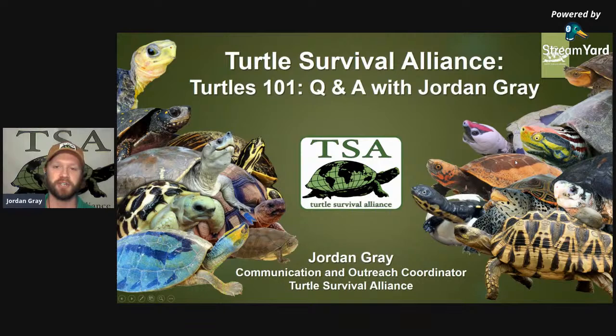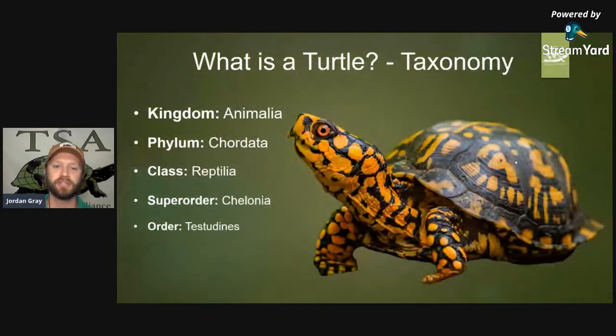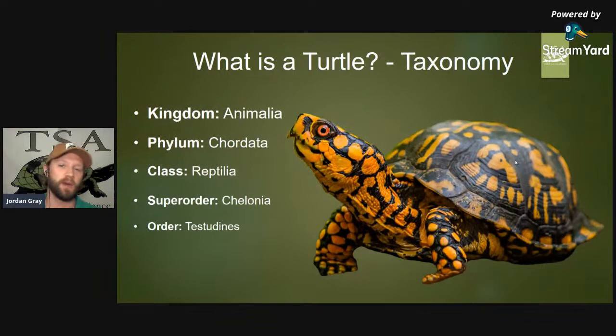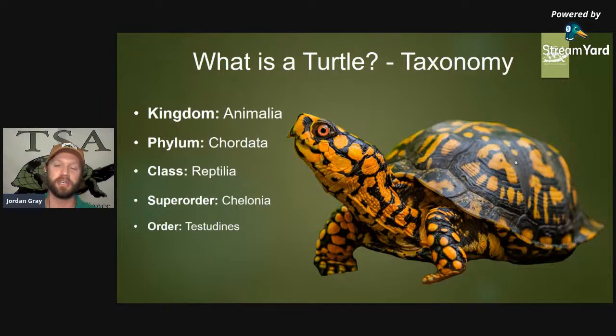So let's start off with what is a turtle — basics, taxonomic classification. When I talk about taxonomic classification, I'm talking about breaking down species of animals and plants into various groups. The way we learned in school, an easy way to remember the order is: King Philip came over for good spaghetti — kingdom, phylum, class, order, family, genus, and species. It's actually a little trickier because there are super orders and sub orders.